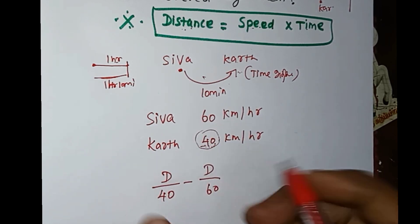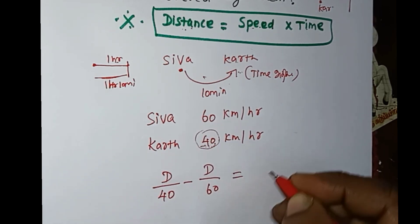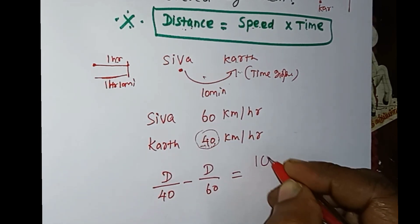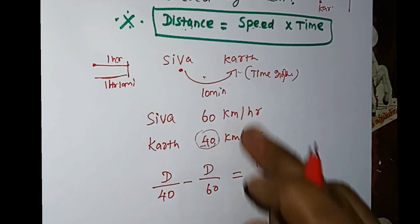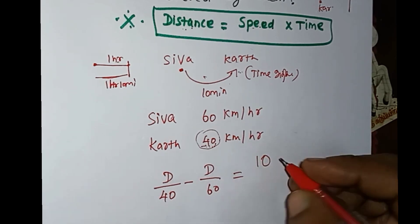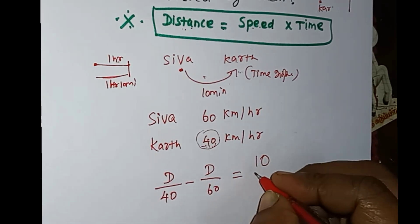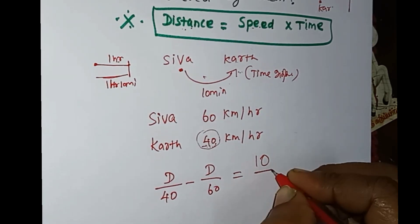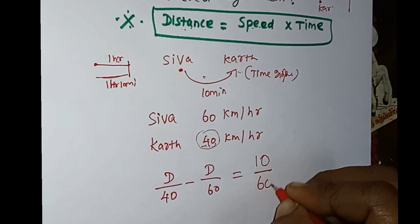We need to find the distance using the 10-minute difference. To convert minutes to hours, divide by 60.